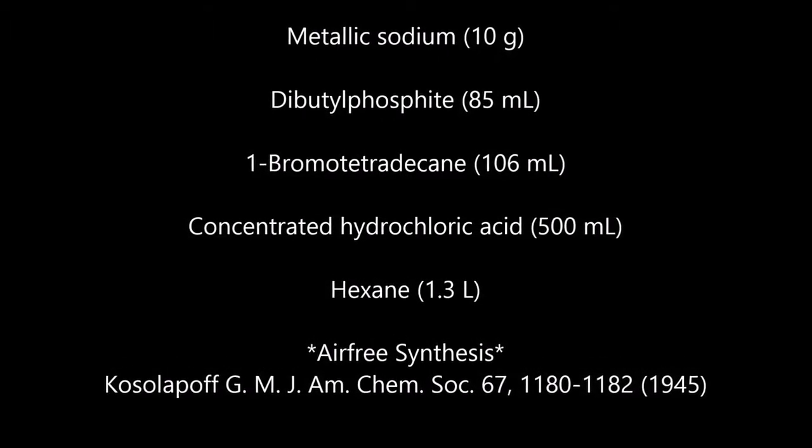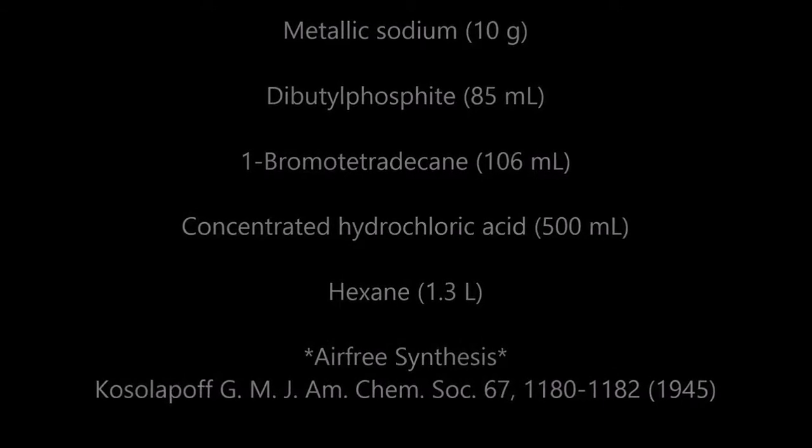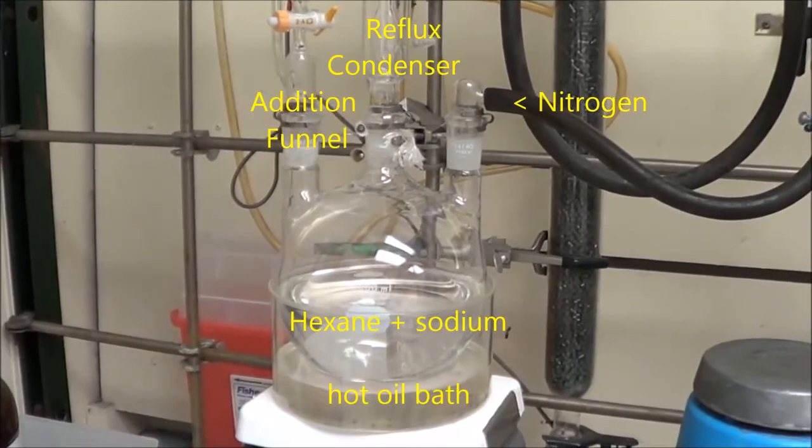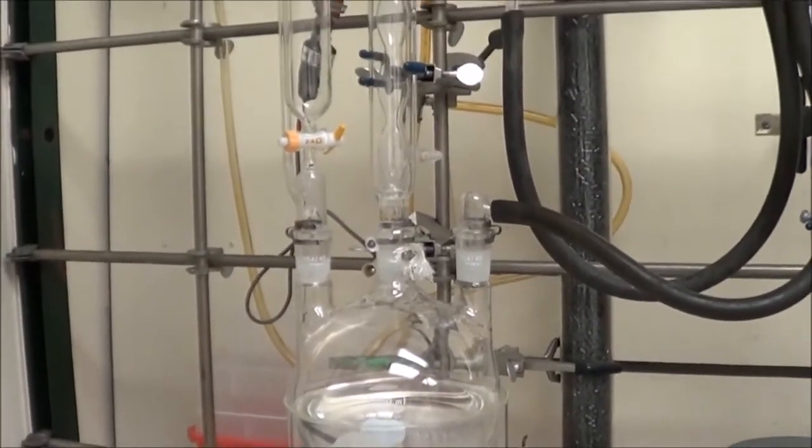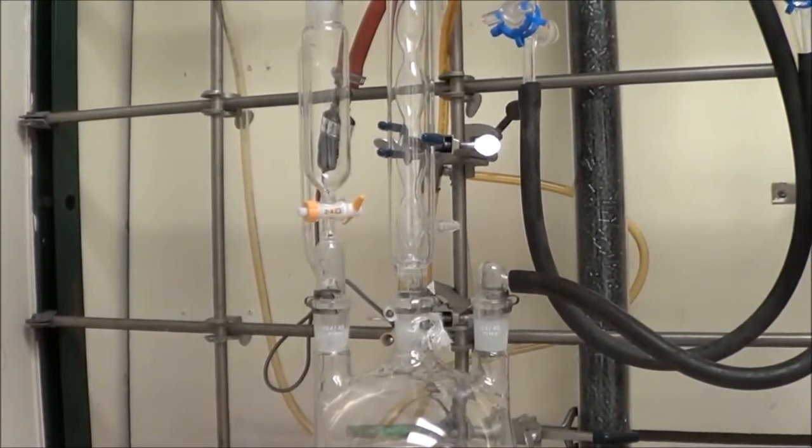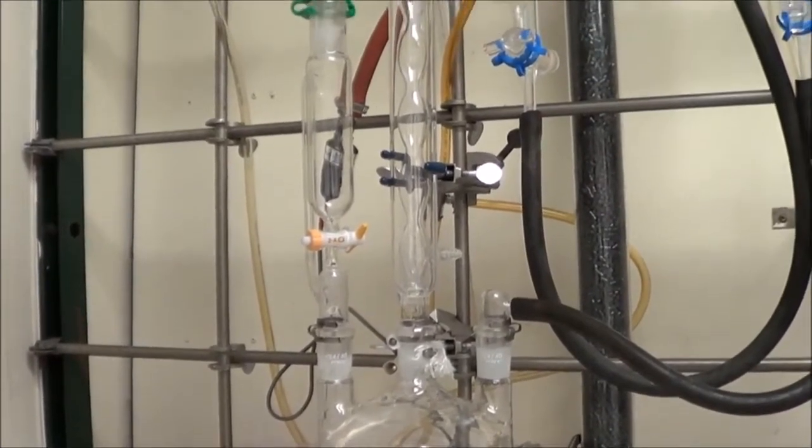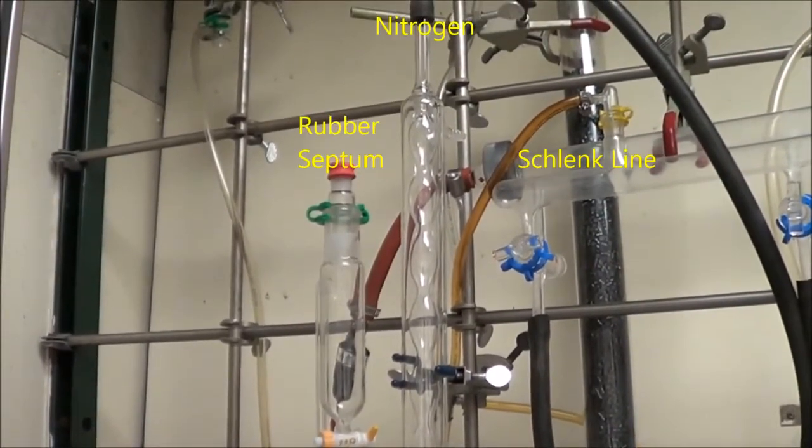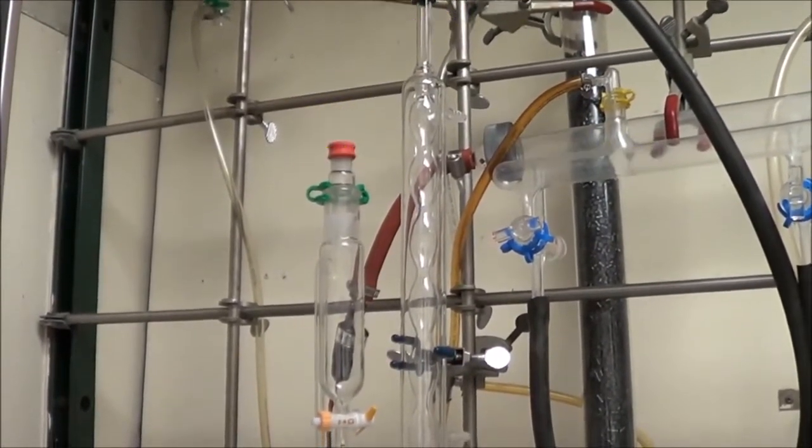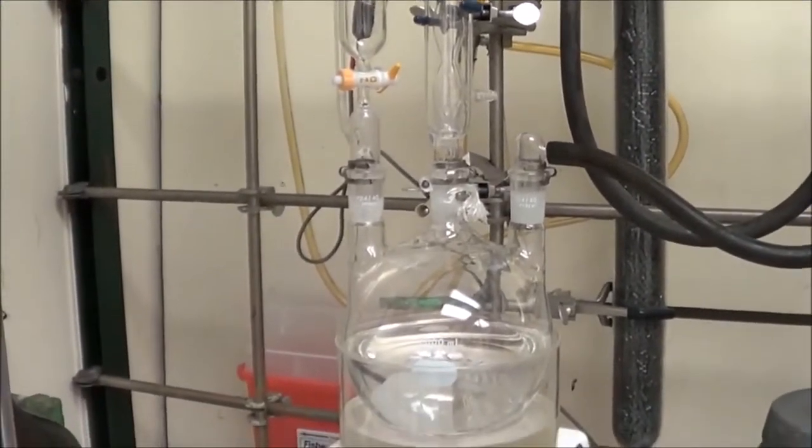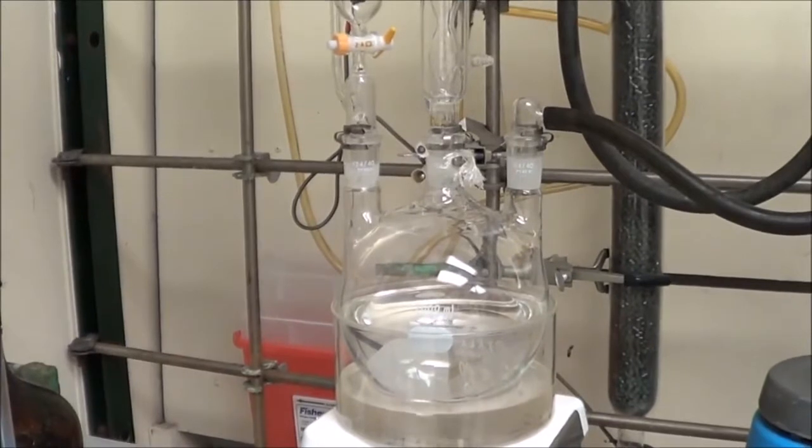We're going to use air-free techniques and air-free glassware. In the round bottom, we've already added the dry hexane and sodium cubes. We have an addition funnel, and the system's under nitrogen. We have a reflux condenser. We don't need to cool that with water because we're refluxing hexane, and air will cool it well enough. The whole system is connected to a Schlenk line to provide dry oxygen-free nitrogen gas.